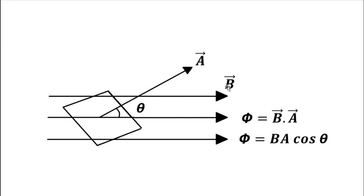When the surface is perpendicular to the magnetic field lines, the maximum number of field lines pass through it. When it is parallel, no field lines pass through it, because theta will be 90 degrees and cos(90°) = 0. When the surface area is perpendicular to the magnetic field lines, theta = 0 degrees, and flux is maximum: B·A·cos(0°) = B·A. So when the surface area is perpendicular, maximum flux; when it is parallel, minimum flux.